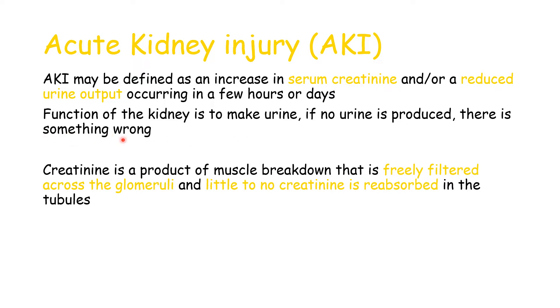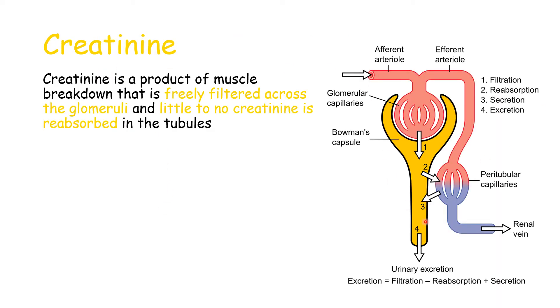To understand kidney failure, we also need to know about creatinine. Creatinine is a product of muscle breakdown that is freely filtered — this is important — across the glomeruli. Little to no creatinine is reabsorbed in the tubules. Here we have a schematic of the functional unit of the kidney: the nephron.